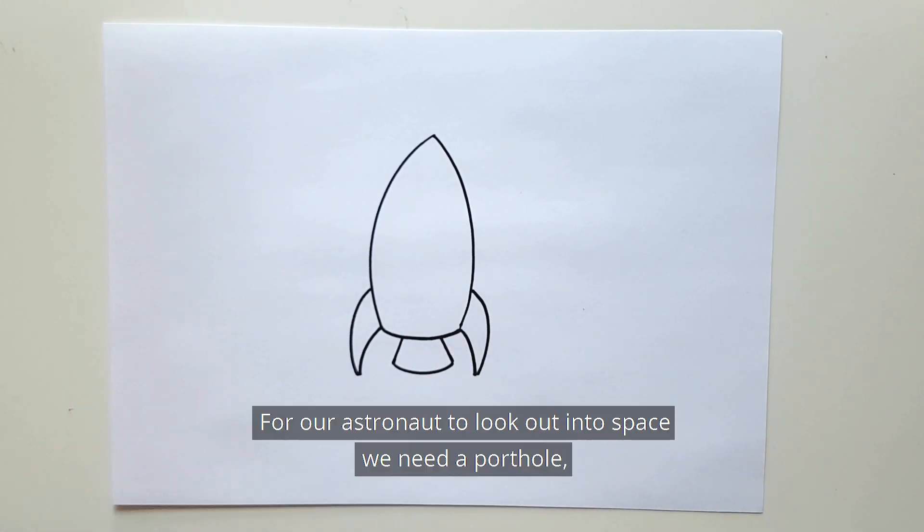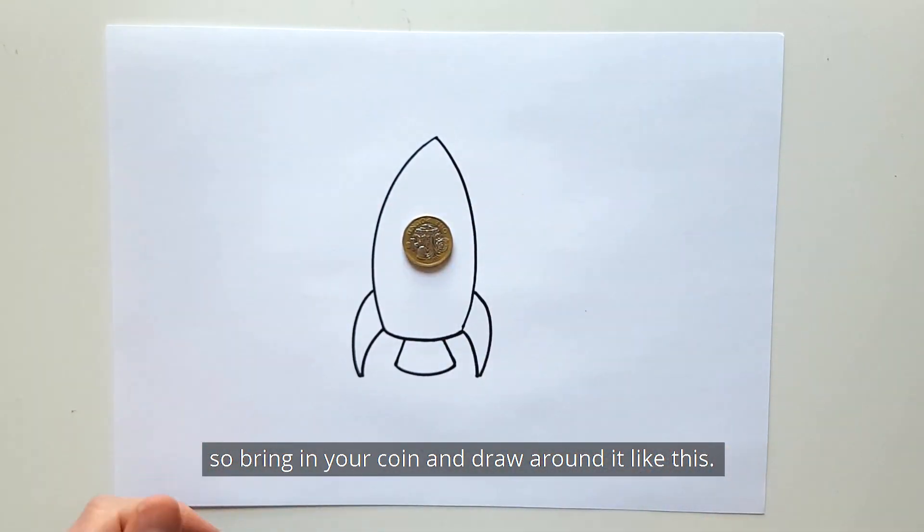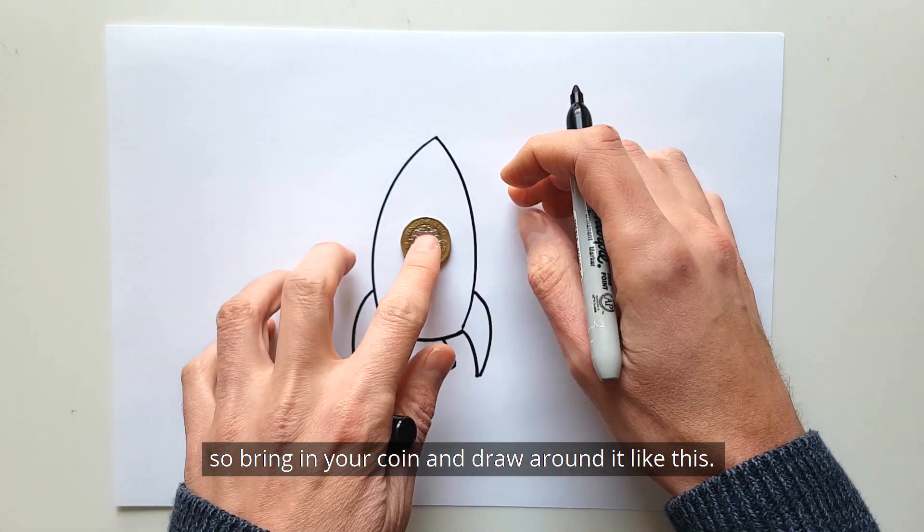Now for our astronaut to look out into space we need a porthole. So bring in your coin and draw around it like this.